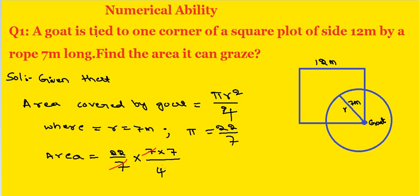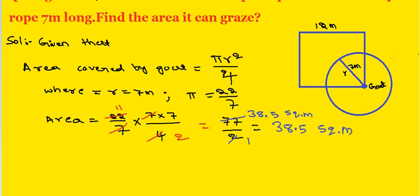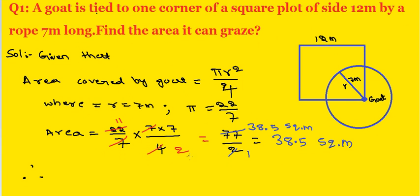Here, 7 and 7 cancel. 4 becomes 2, 22 becomes 11. That equals 11 into 7 equals 77 by 2, that equals 38.5 square meters. Therefore, the goat grazes 38.5 square meters.